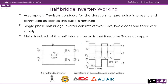Now we will see the working of the half bridge inverter. When thyristor T1 is turned on with the help of ig1, current from the VS/2 source will flow through the positive of the load and reach the negative terminal of the battery. When T1 is ON, current flows through the positive of the load, so whatever voltage is applied falls across the load as V0.